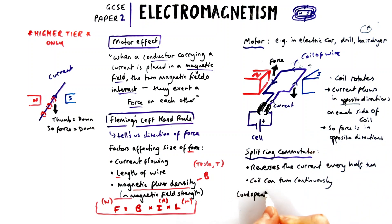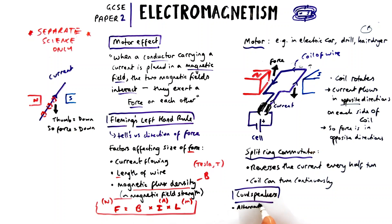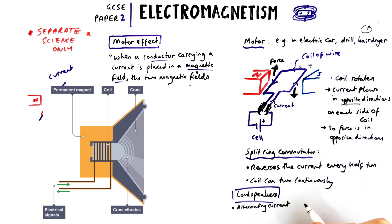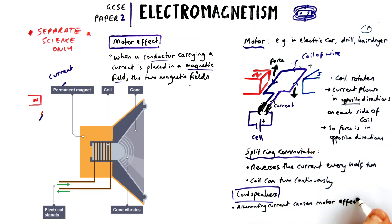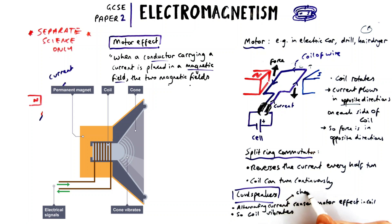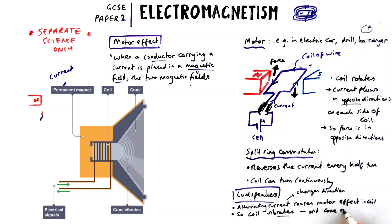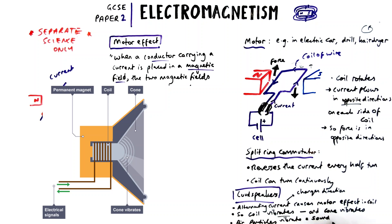An application of this you need to know if you're studying separate science is in a loudspeaker — any speaker in the world works like this. It relies on alternating current, which is changing direction, to cause a motor effect in the coil. Because it's alternating current the coil vibrates and changes direction quickly, therefore the cone where the sound comes out also vibrates. Air particles near the cone vibrate at the same frequency, which means sound waves are produced at that same frequency.